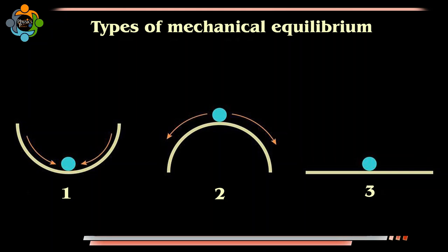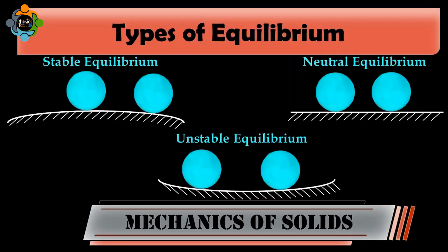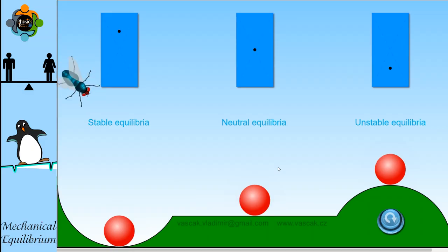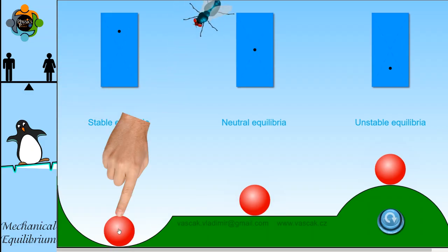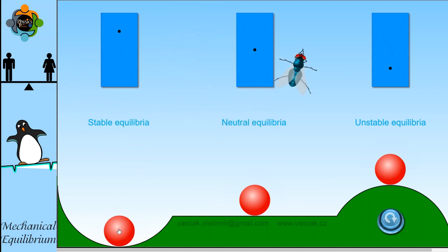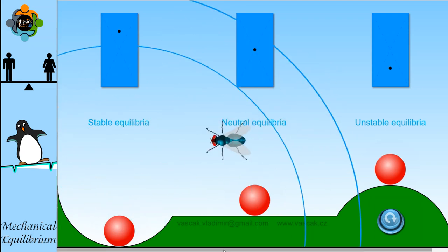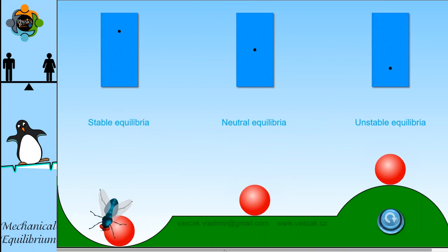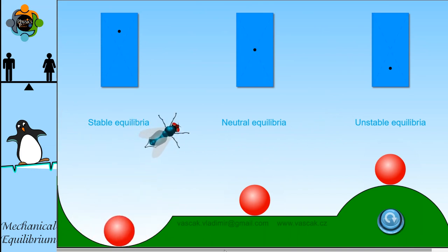Now let's delve deeper into the types of mechanical equilibrium. There are three types: stable, unstable, and neutral equilibrium. To illustrate this, imagine a metal ball placed at the bottom of a concave surface. When the ball is at rest, it's in stable equilibrium, because if it is displaced slightly, it returns to its original position.